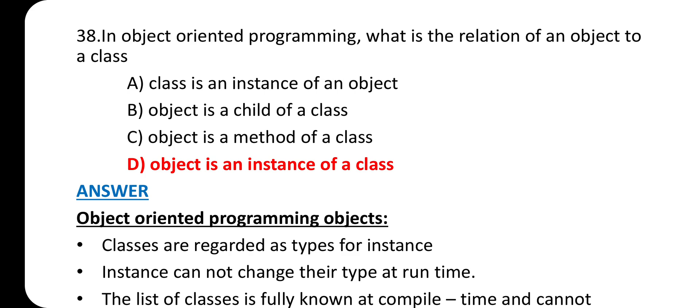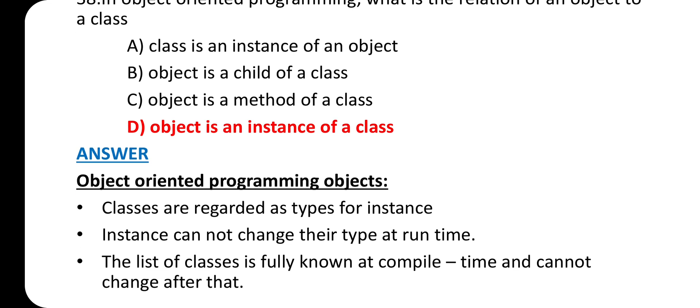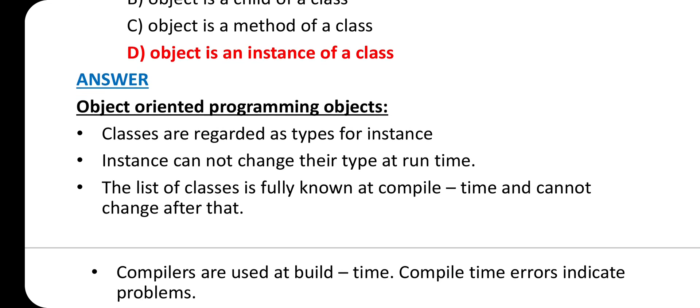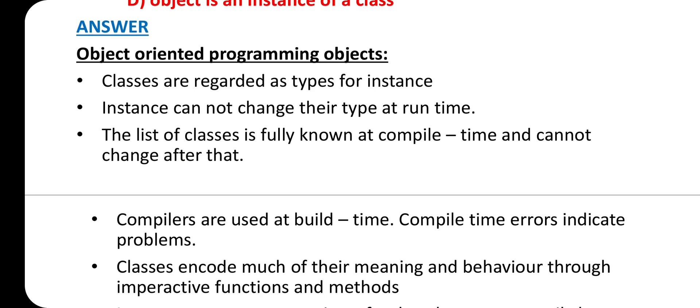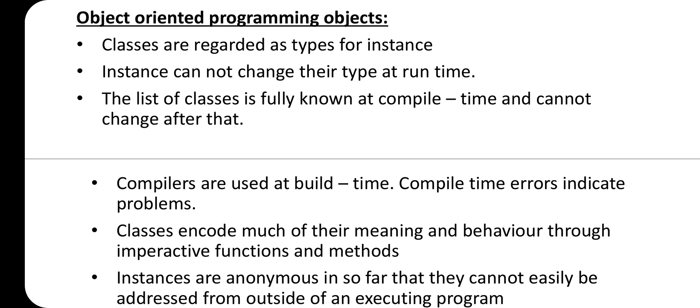Question 38: In object-oriented programming, what is the relation of an object to a class? Answer is option D: Object is an instance of a class. Object-oriented programming is an approach to designing modular reusable software systems. It's an evolution of good design practices going back to the beginning of computer programming, a logical extension of techniques like structured programming and abstract data types.